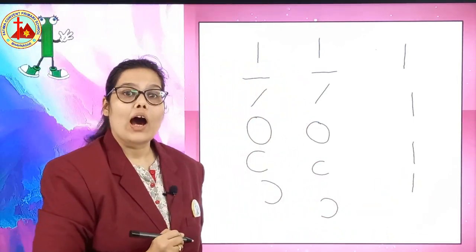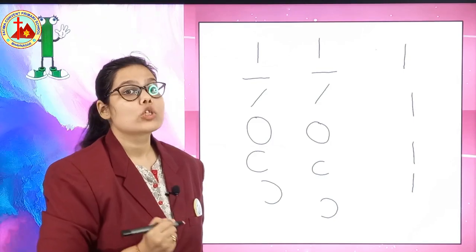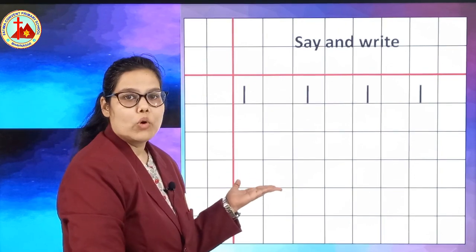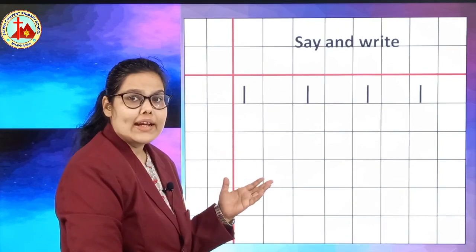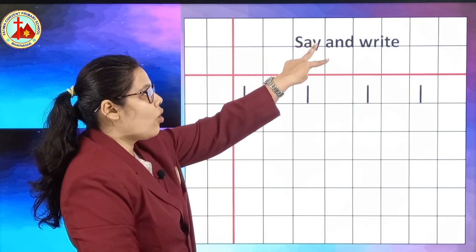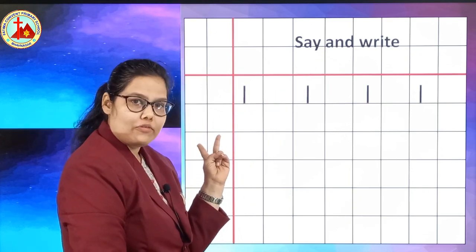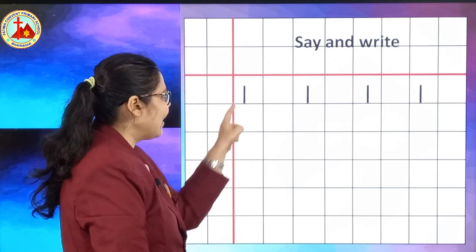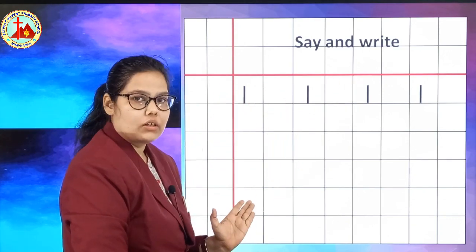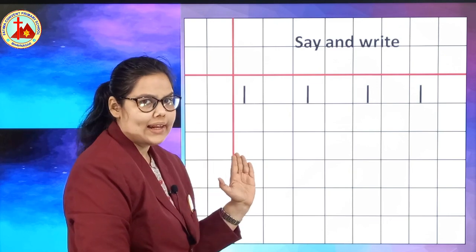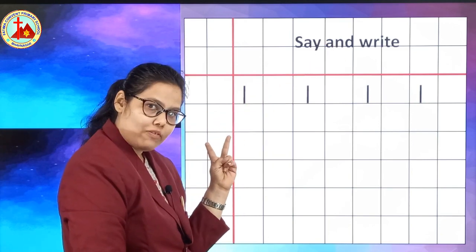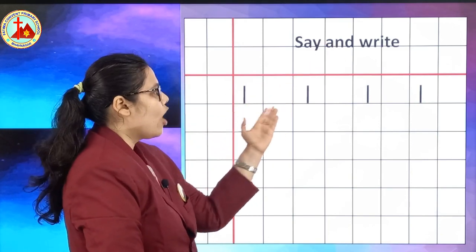Now I will teach you how to write 1 in your square line book. So children, this is your square line book page. Children, whenever you write in your square line book, remember you have to leave 2 lines on the top and 2 lines on the left side. Okay. And see how miss has written.